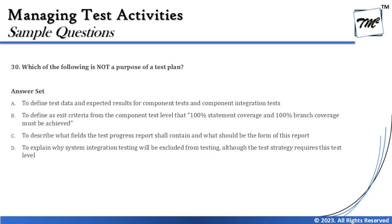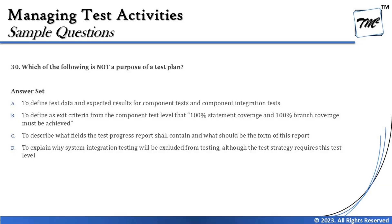Option C says to describe what fields the test progress report shall contain and what the form of this report should be. This is certainly true, because one of the elements of the test plan is to determine the number of documents, the type, the details, and the template for them — so that goes right in the test plan.